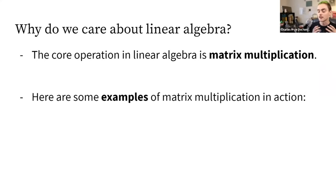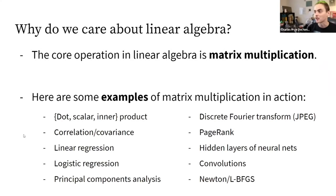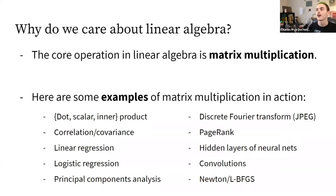The core operation in linear algebra — the core operation we use to manipulate arrays — is matrix multiplication. Examples of matrix multiplication in action include: the dot, scalar, or inner product; correlation and covariance in statistics; linear and logistic regression; principal components analysis; the discrete Fourier transform; PageRank; and hidden layers of neural networks and convolutions.